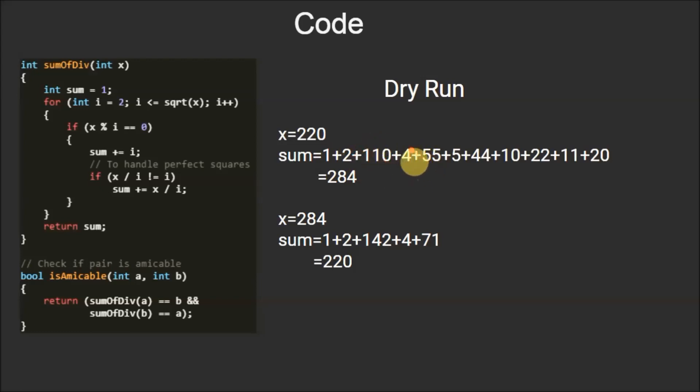Then 4 is added and its divisor pair is also added, that is 55. These both multiplied together will make 220. Then third divisor 5 with its pair is added, 44. Then fourth divisor 10 is added with its pair 22. Then fifth divisor 11 is added with its pair 20.